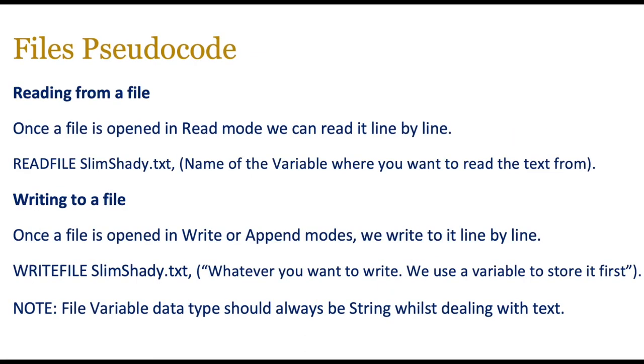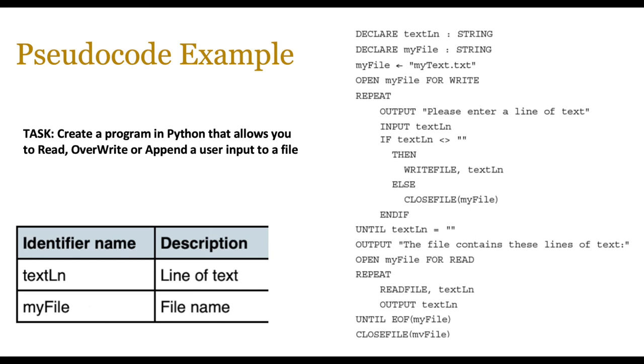Now two other aspects you can play around with files is reading from a file and writing to a file, and these are again pretty straightforward. So once the file is opened in read mode, you can just use the command READFILE and the name of the file, and then any particular variable you want to get from it has to be written in brackets. And if you want to write something or you want to append something, we write it line by line, so you can use the WRITEFILE command where you simply have WRITEFILE in uppercase, the name of the text file, and then whatever you want to write. We normally use a variable to store this data first, but you can also directly put text in. However, the file variable should be the same data type, and I think for text files it should always be string. You should not be using integer, otherwise you can end up with a type mismatch error.